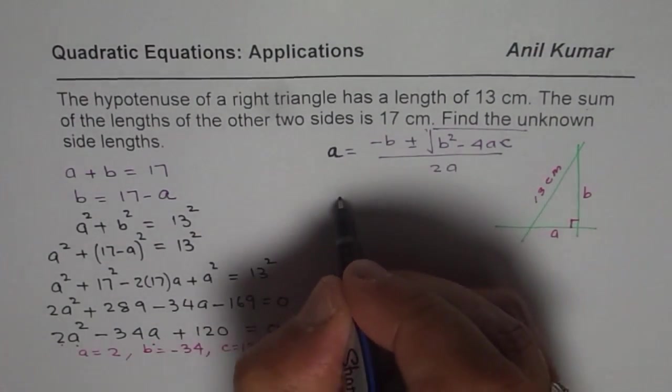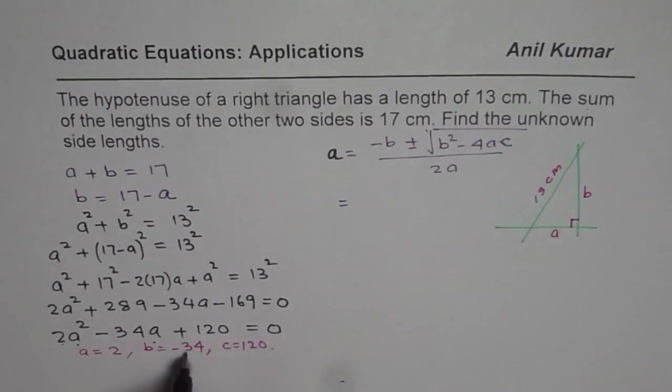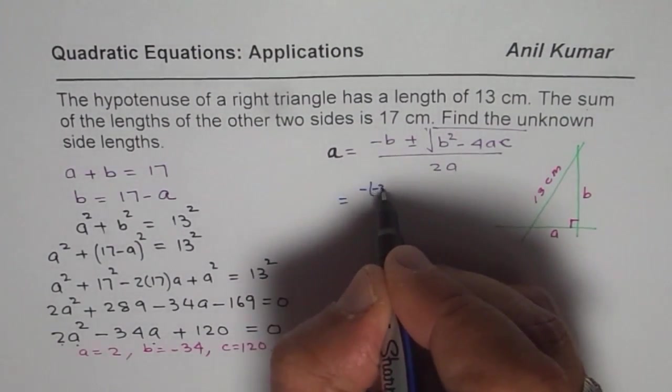So let us substitute. So we get minus B, minus of minus 34.